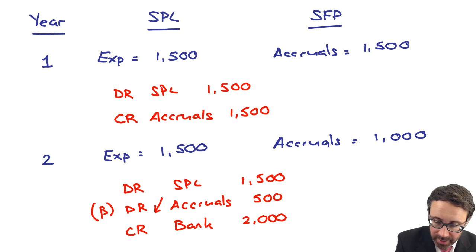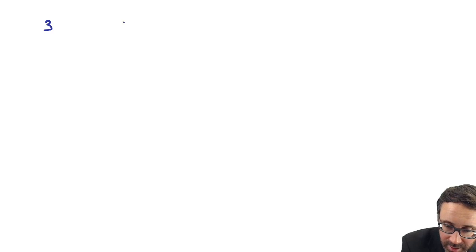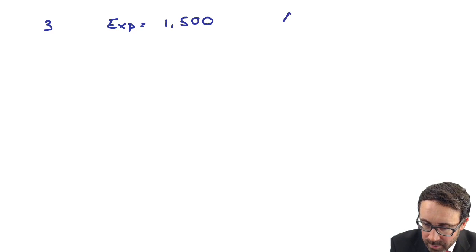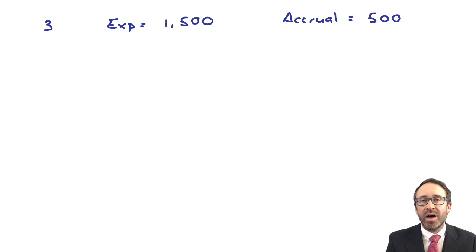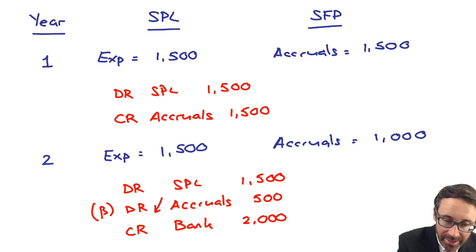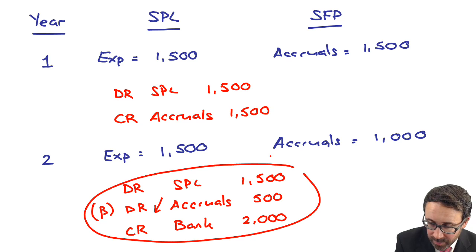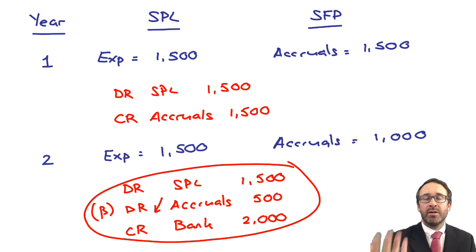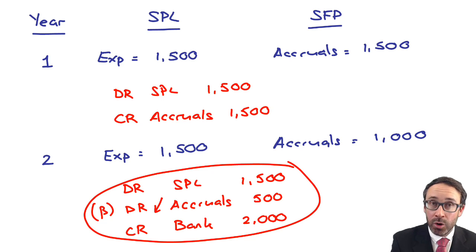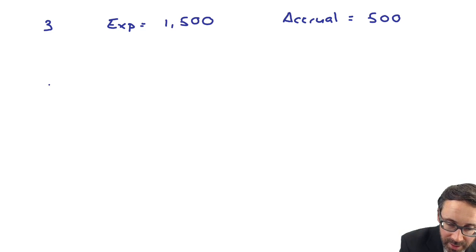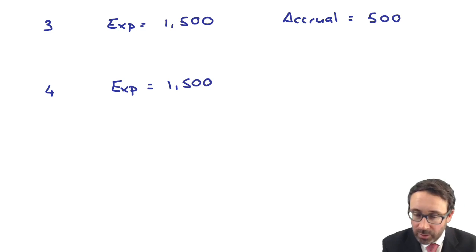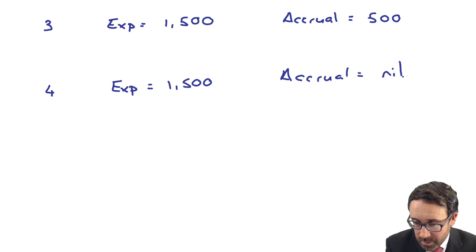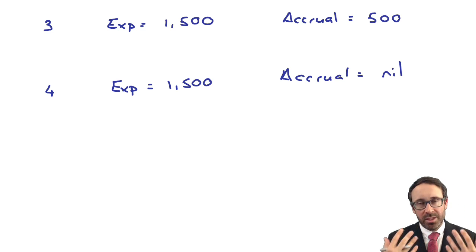Carrying that on for year three: the expense is again $1,500, and the accrual reduces by another $500 from $1,000 down to $500 — the same entry applies as in year two, paying another $2,000, recognising another expense of $1,500, and releasing the accrual by $500. And then finally in year four, the expense is $1,500, and you release that final $500 so that the accrual comes down to nil.